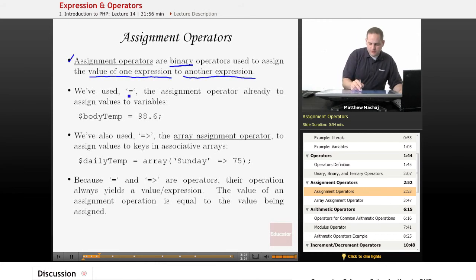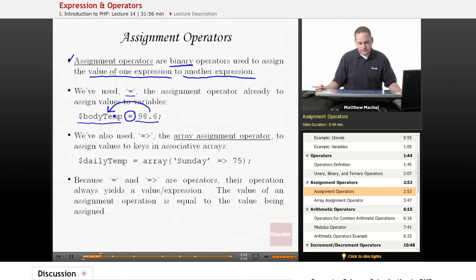So for example, with the assignment operator, which we know is the equal sign, we have this expression here, 98.6, the float. And we have this expression over here, body temp, the variable. And the assignment operator says take this value and assign it to the variable on the left. So we have two expressions there.